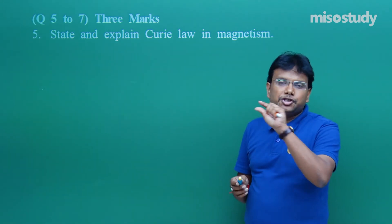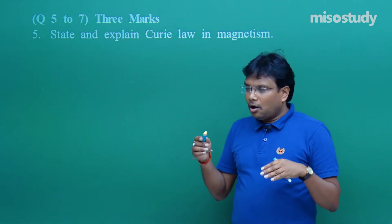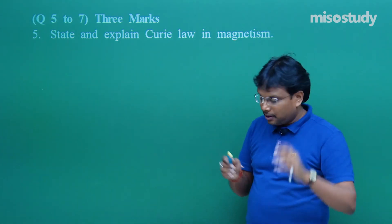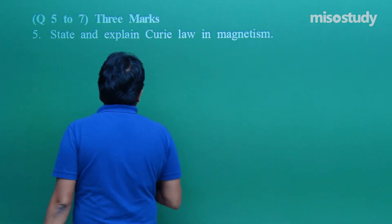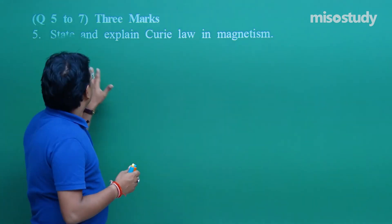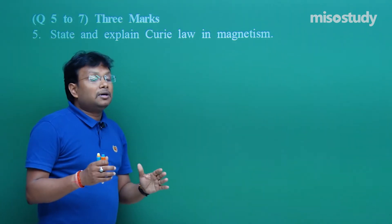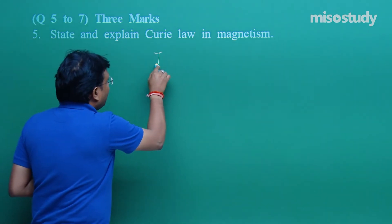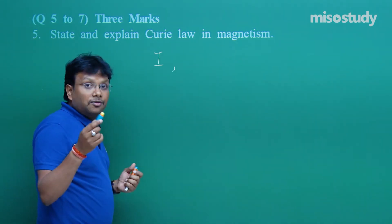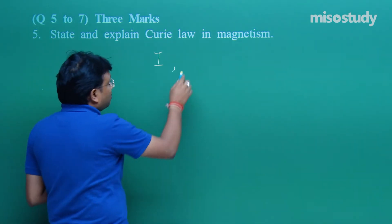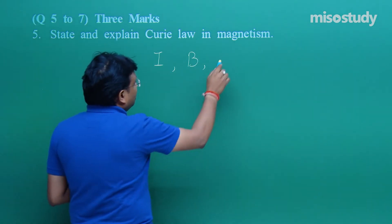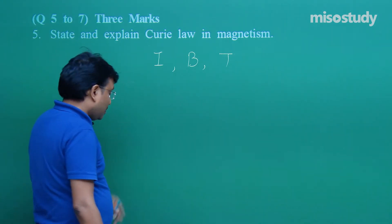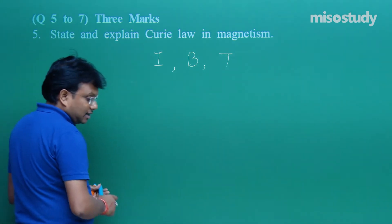Here I will give you a short general idea. Curie Law in magnetism is associated with magnetic field intensity, magnetization I, and temperature T. This relation shows you a specific sequence — I is directly proportional to B, and I is inversely proportional to T.